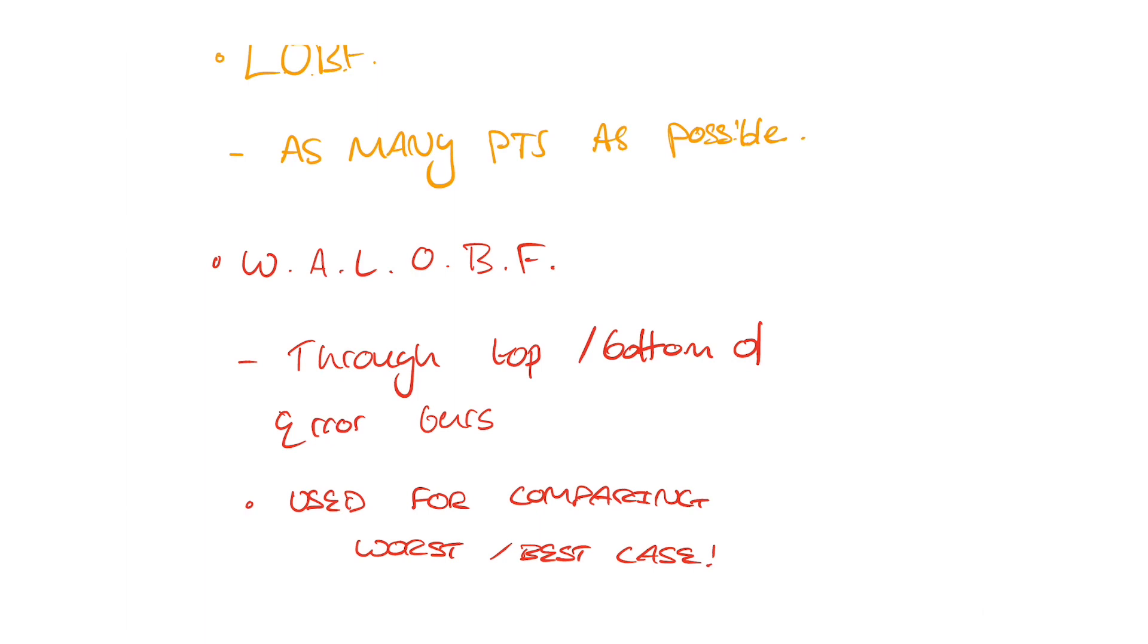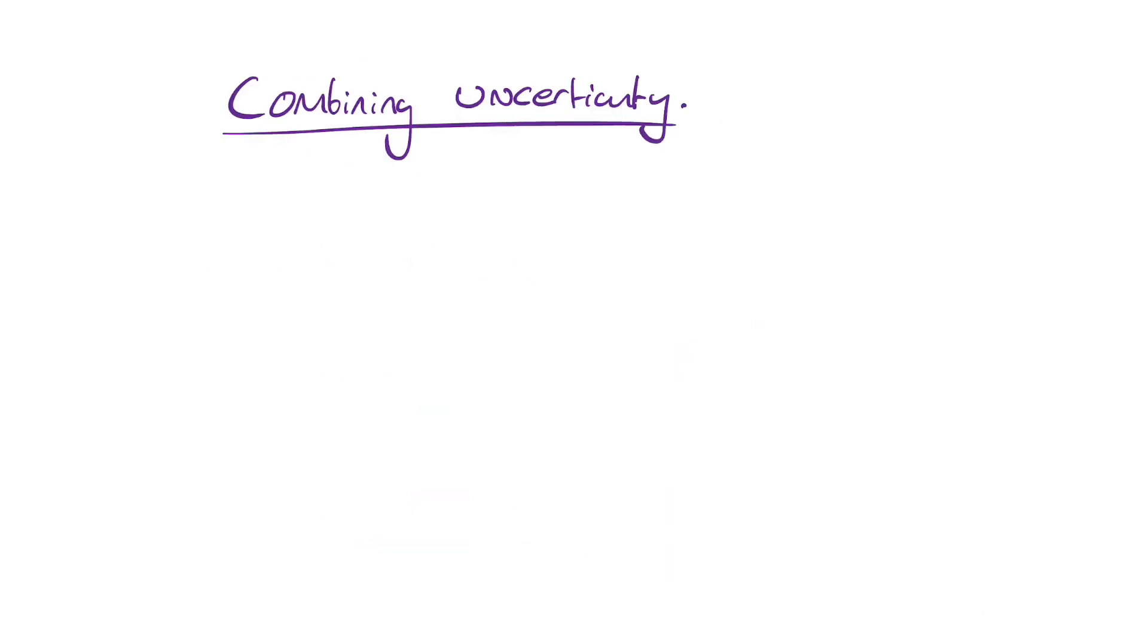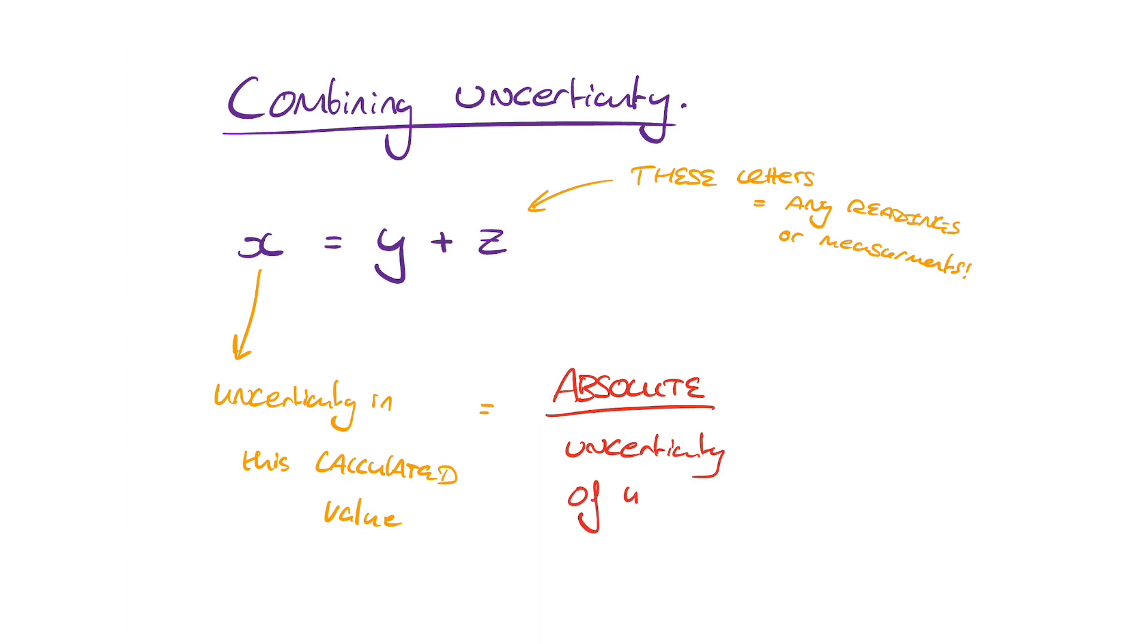Another thing we can do is to combine uncertainty. To find combined or final uncertainty, we take into account every reading. Here are some examples. If you have an equation, say x equals y plus z, the absolute uncertainty in x is equal to the absolute uncertainty in y plus the absolute uncertainty in z. We don't usually need this. It's not actually that useful.